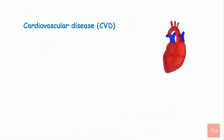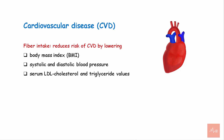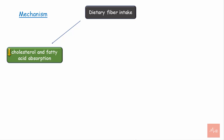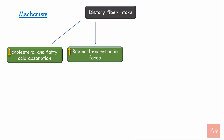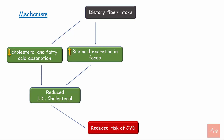Regarding the effect of dietary fiber on cardiovascular diseases: fiber intake reduces risk of cardiovascular disease by lowering the body mass index, systolic and diastolic blood pressure, and serum LDL cholesterol and triglyceride values. Dietary fiber consumption leads to chelation of cholesterol in the lumen of the small intestine, reducing cholesterol and fatty acid absorption. There is also increased fecal excretion of bile salts, which reduces cholesterol synthesis by the liver and decreases circulating plasma LDL levels, resulting in reduced total serum cholesterol and reduced risk of cardiovascular disease.